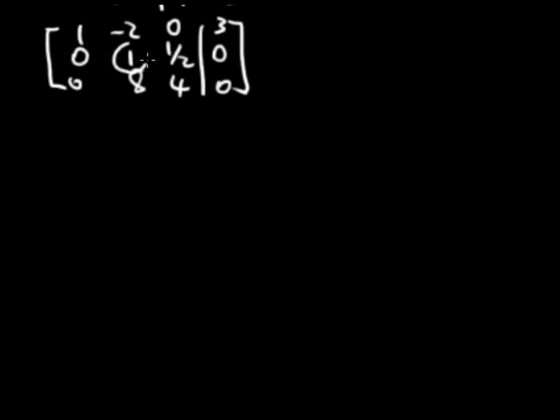Now I need this to be a leading one, so I need to clear the column as well. So the row I'm trying to get a leading one for, which is row 2, will stay the same. 0, 1, 1 half, 0.